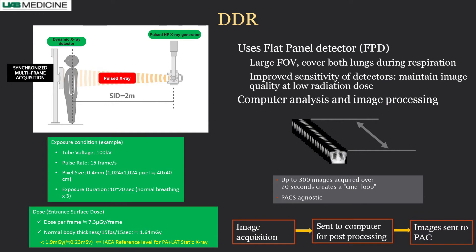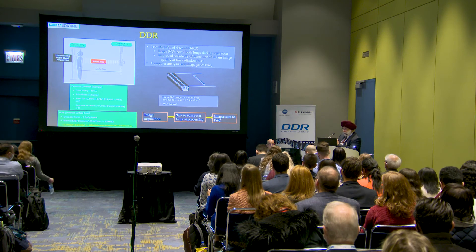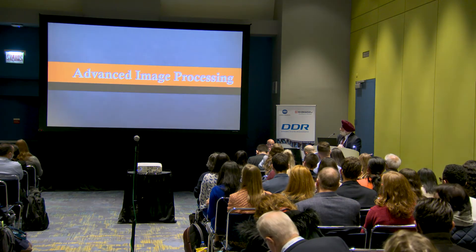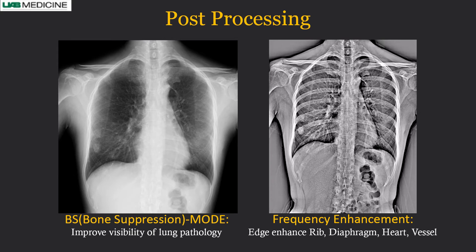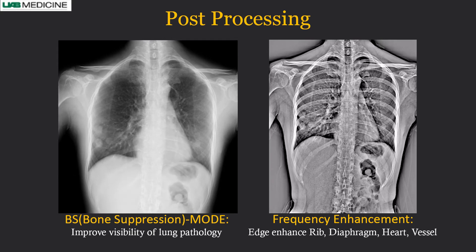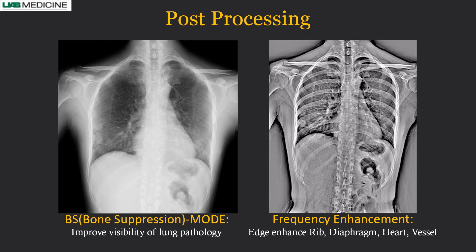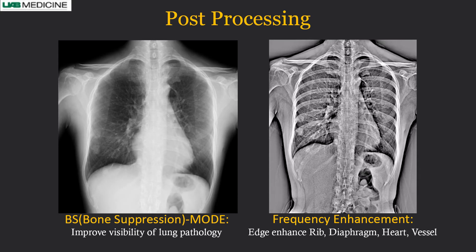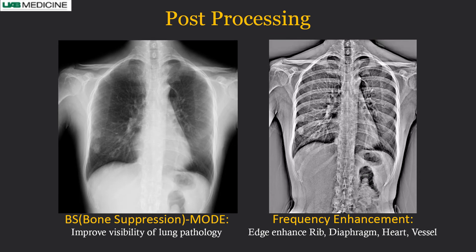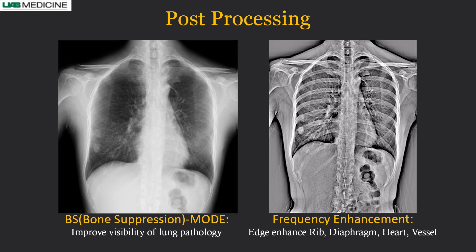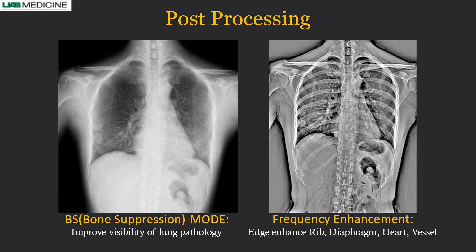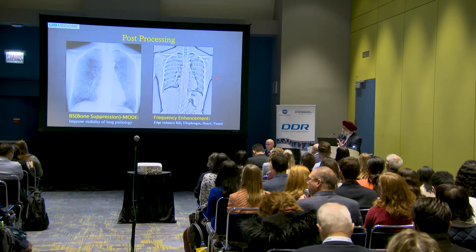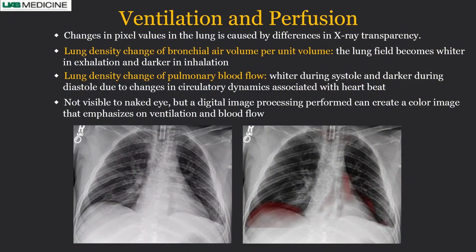Once processing is done, you get all the images: a static PA, a lateral, and the image with motion. There are also post-processed images. Post-processing can involve bone removal — similar to dual-energy radiography — but with movement, so you can look at a nodule in the right lung very clearly. Or you can edge-enhance it, called frequency enhancement, to look at bones and sharp edges around the diaphragm and cardiac silhouette. This is also useful for looking at lines and tubes.